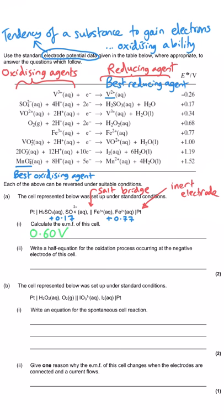We can double-check that using the rule that the EMF of a cell is the electrode potential for the thing on the right minus the electrode potential for the thing on the left. That's 0.77 minus 0.17, which still gives 0.6. It will typically be a positive EMF, unless they're trying to catch you out and get you to suggest a reaction wouldn't actually happen — that would be the case if the EMF came out as a negative value, meaning the direction implied by the cell wouldn't actually occur.